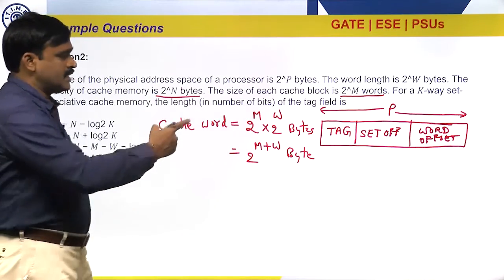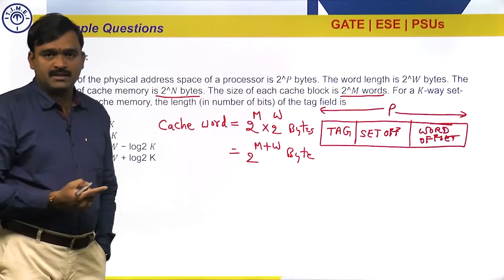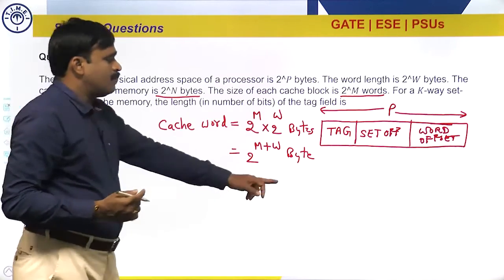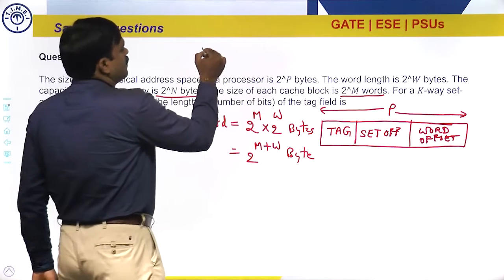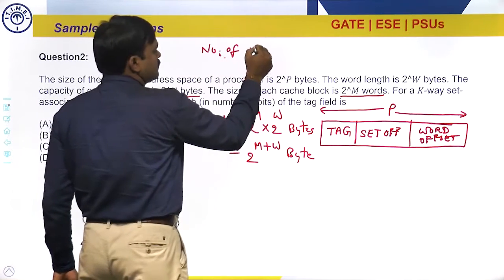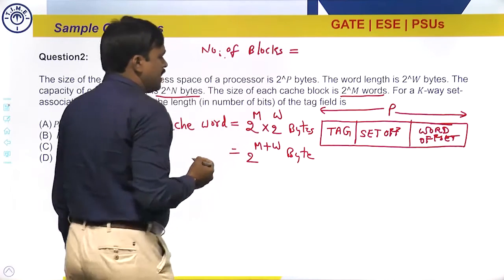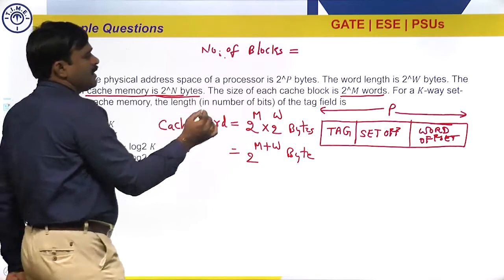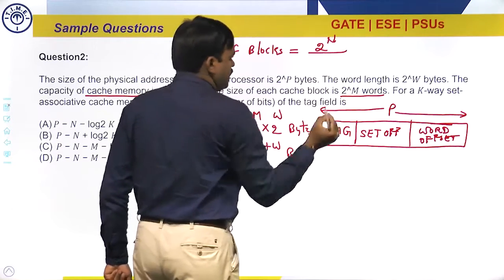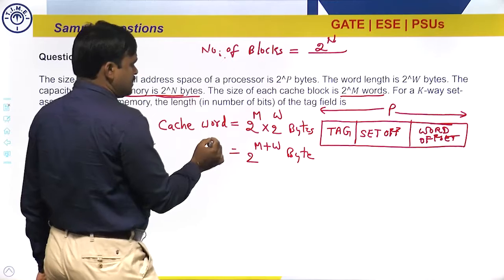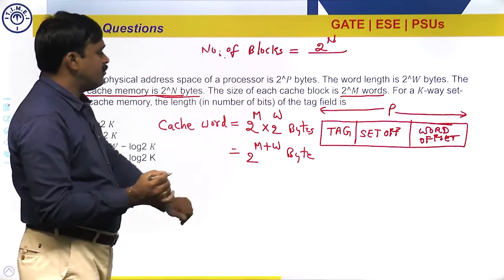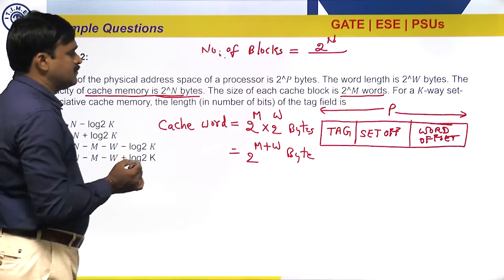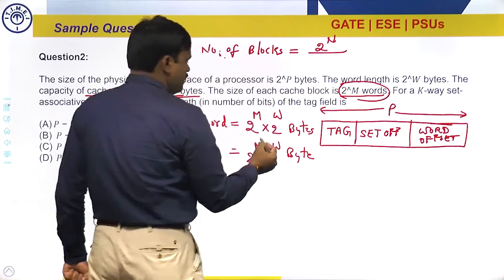To identify one byte in the block we require m+w bits, so the word offset (or byte offset for byte-addressable memory) is m+w bits. Now, number of blocks equals cache size divided by block size. Cache memory size is 2^n bytes and block size is 2^(m+w) bytes, so number of blocks equals 2^n divided by 2^(m+w).